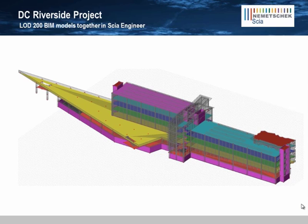Having the structural model means the engineer doesn't have to start from scratch. Instead of importing 2D CAD drawings and remodeling the structure as you would in a traditional engineering analysis program, SIA Engineer lets the engineer easily reuse the structural geometry the architect has already created. In this model, the floor slabs from the architect transfer in as 2D elements.